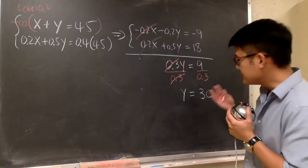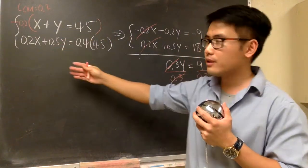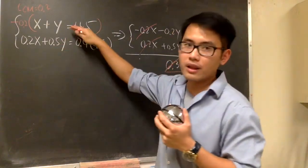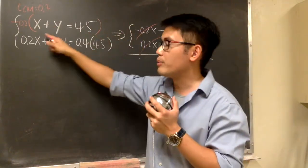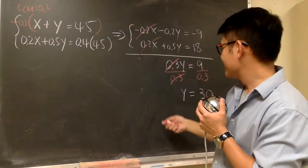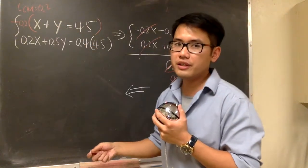And now, we take y is equal to 30, and we go back to the original question, right here. Either one. And let's use the first one, use the first equation, because it has whole numbers. I don't like decimals. So, right here, let's bring this back. y is 30, so plug in 30 here.